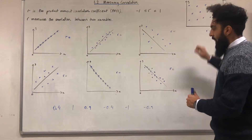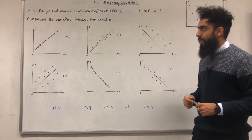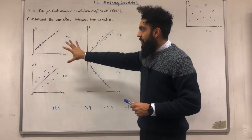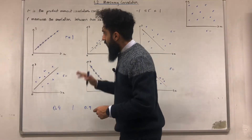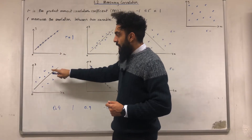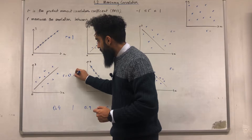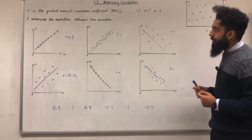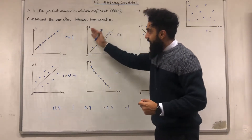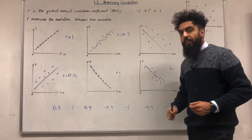I've got some coordinate grids up on the board and some values for R. For each grid I'm going to assign the correct R value. The first grid has a straight line with positive gradient and points on the line — I assign R = 1, a perfect positive correlation. The next grid has points quite close to a positive line — R = 0.4, a weak positive correlation. Another grid with a positive gradient and points close to the line — R = 0.9, a strong positive correlation.